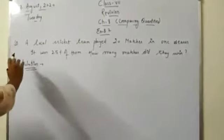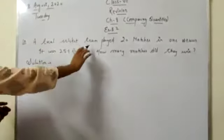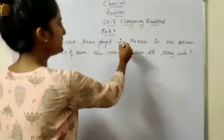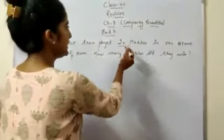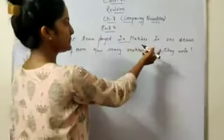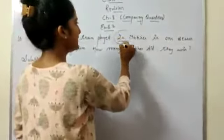Next question number 10. A local cricket team played 20 matches in one season. It means the number of cricket matches played by the team in one season is 20 matches.